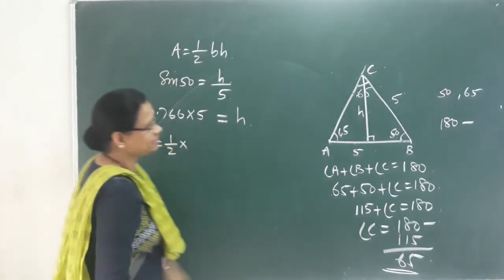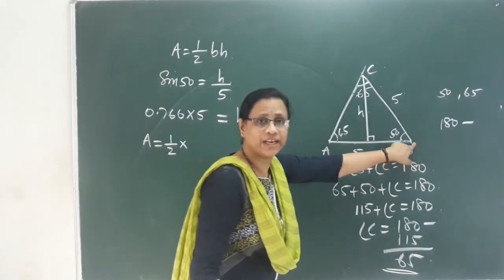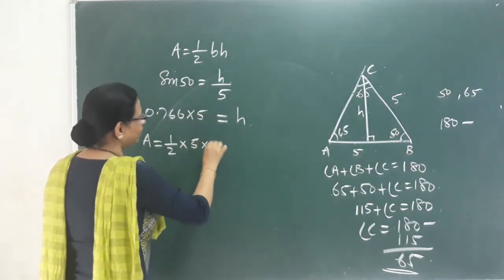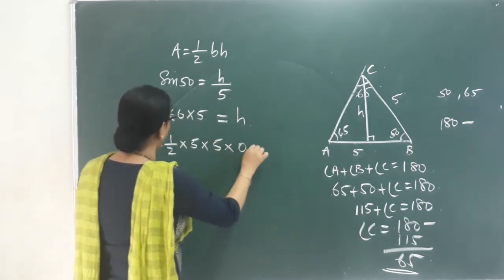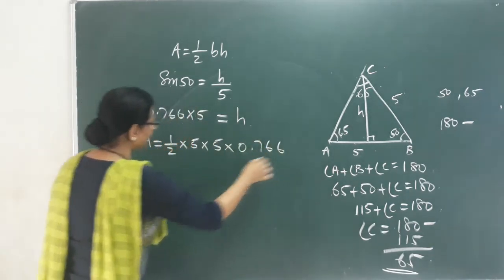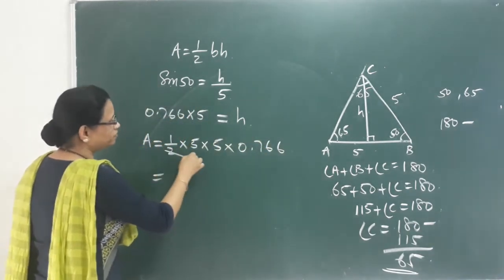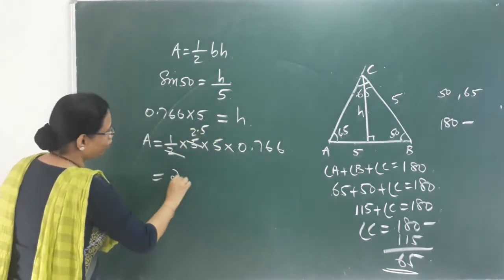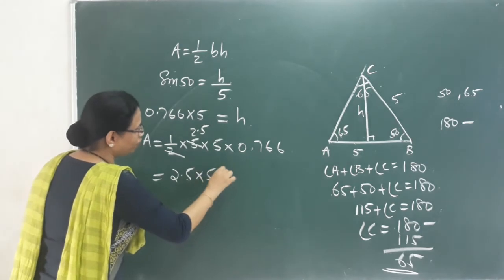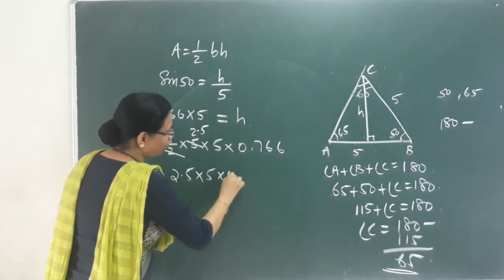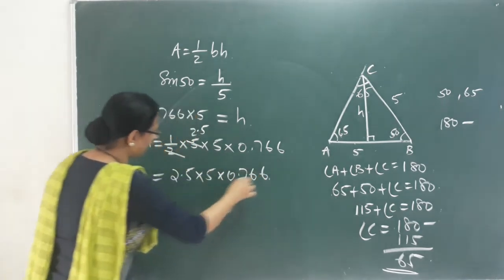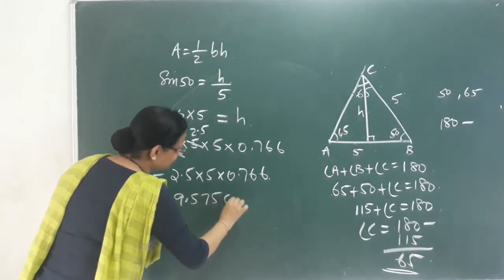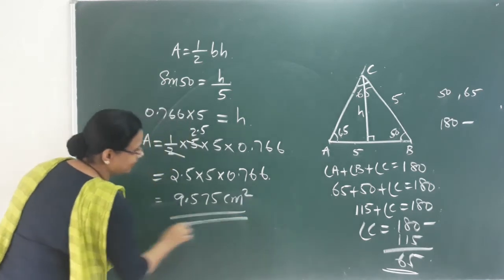Area equals half into base into height. The base is 5. So area equals half into 5 into 5 into 0.766, which equals 2.5 into 5 into 0.766, giving 9.575 cm².